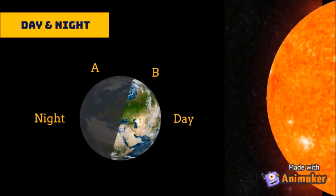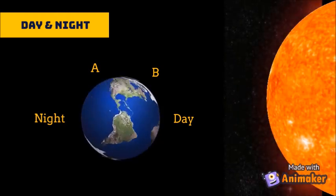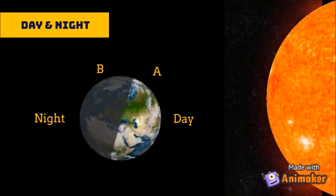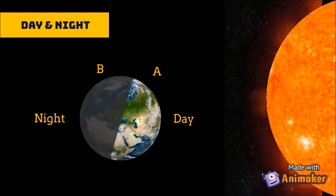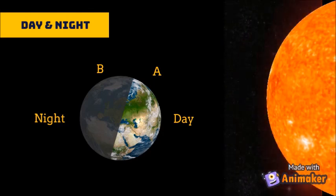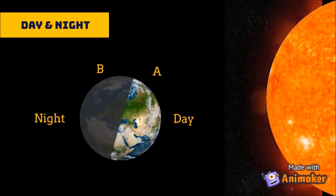As the Earth spins all the time, the area where it was day moves to the other side and night occurs there. And the side where it was night before now faces the sun, and day occurs here.